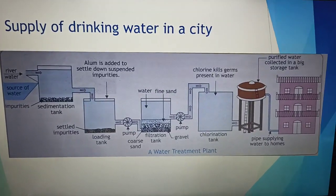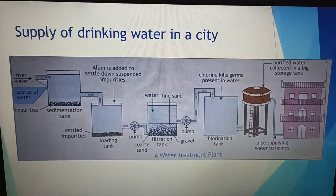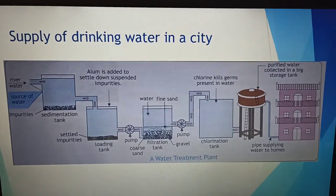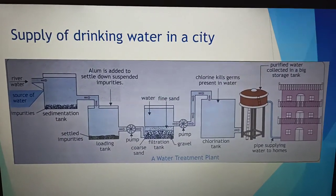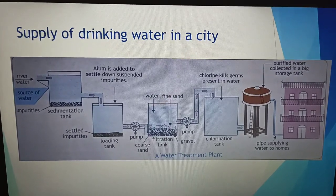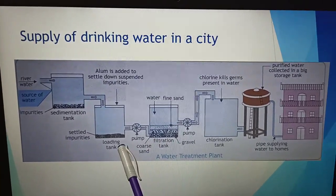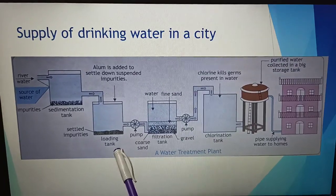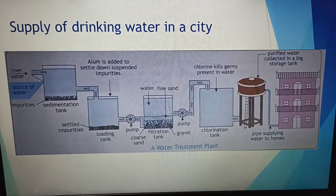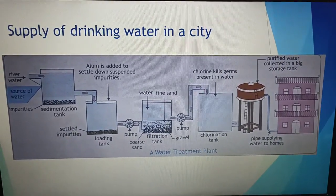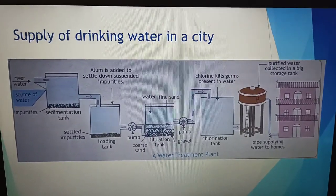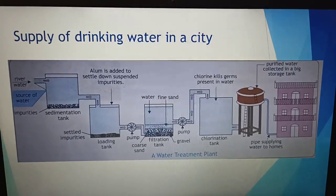One such basic chemical is alum — known as 'fitkari' in Hindi. Now, once the lighter impurities have been separated in the loading tank, the water can be transferred to the next tank — the filtration tank. The filtration technique separates the smallest impurities with the help of a medium, or filter.